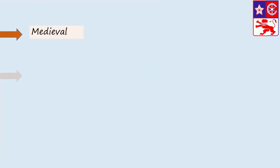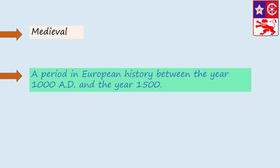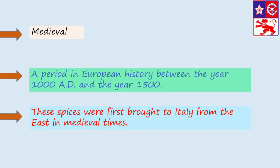Medieval. A period in European history between the year 1000 AD and the year 1500. For example, these spices were first brought to Italy from the East in medieval times.